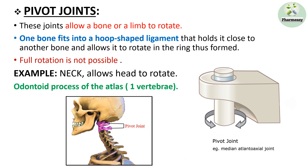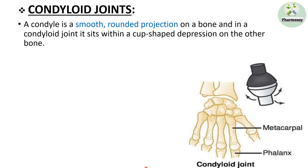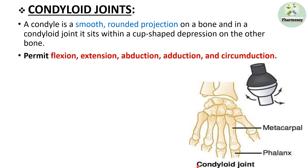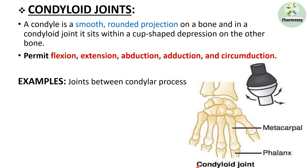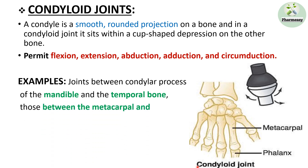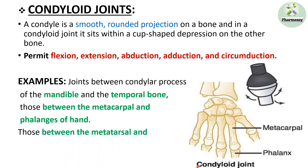The second-to-last joint is the condyloid joint. A condyle is a smooth, rounded projection on a bone that sits within a cup-shaped depression on the other bone. This joint allows flexion, extension, abduction, adduction, and circumduction. Examples include the joint between the condylar process of the mandible and the temporal bone, joints between the metacarpal and phalanges of the hand, and joints between the metatarsal and phalanges of the foot. The diagram shows the condyloid joint between the metacarpal and the phalanges.